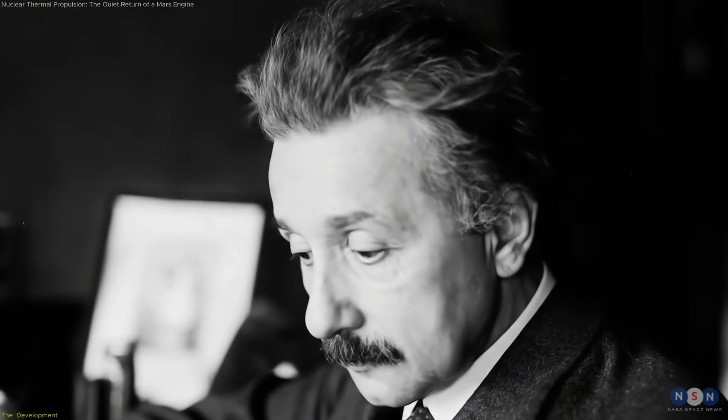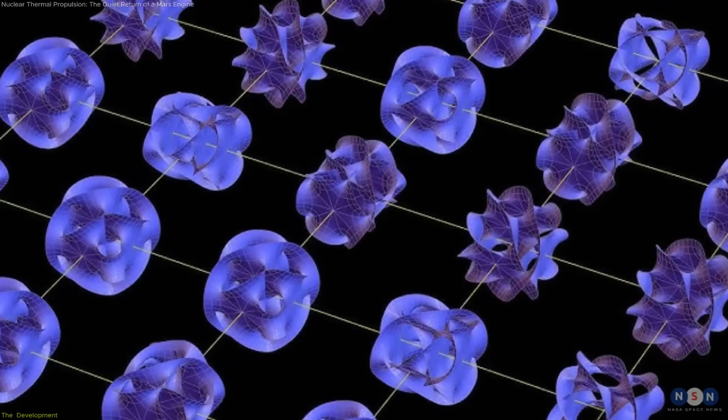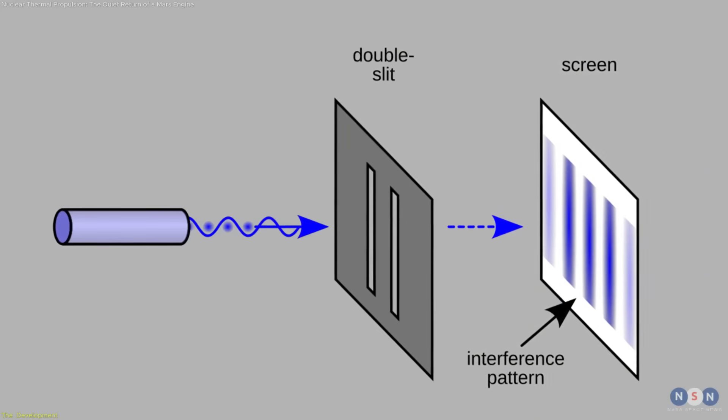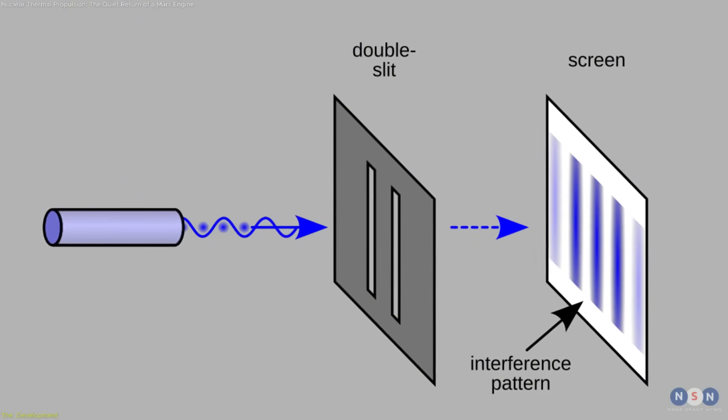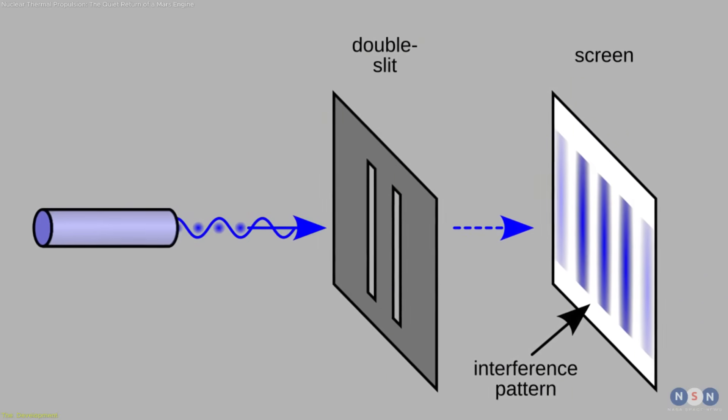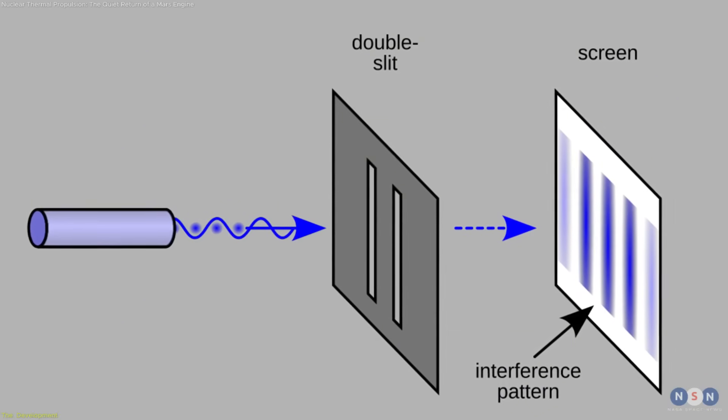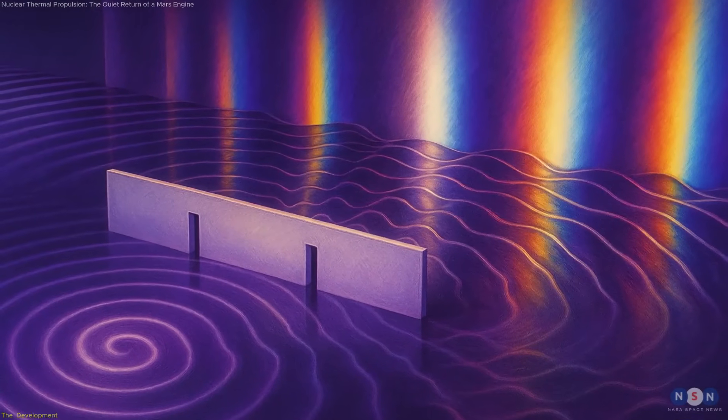Although the experimental designs were different, both were built to realize a version of Einstein's original proposal with far greater precision than ever before. The problem they set out to test comes from the double slit experiment, where individual photons passing through two openings form an interference pattern, a clear sign of wave behavior.